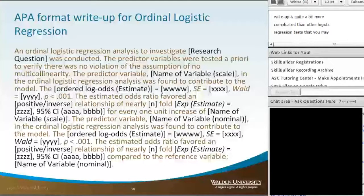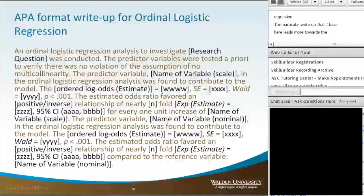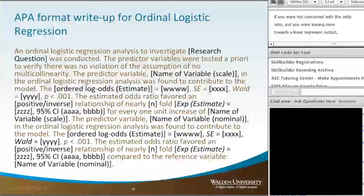Earlier in the presentation I said that ordinal logistic regression can be either an extension of multiple linear regression or an extension of bivariate logistic regression. This particular write-up leans more towards the bivariate logistic regression because we're actually going to report the odds ratio. If you were not concerned with the odds ratio and were leaning more towards a linear regression output, then you would include the threshold estimates that were part of the parameter estimates.